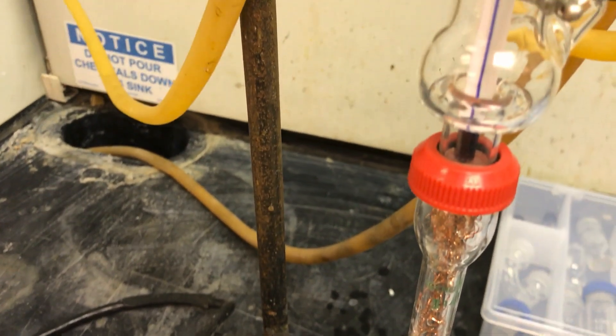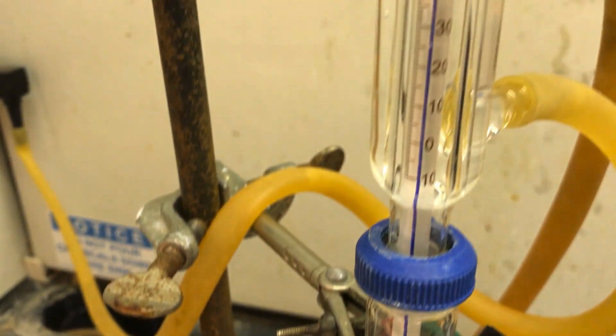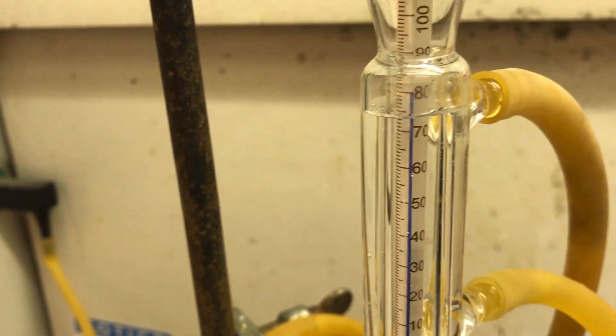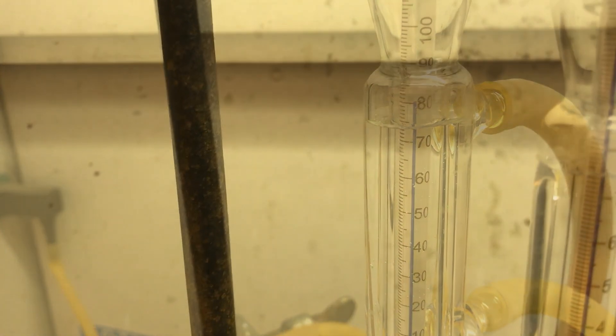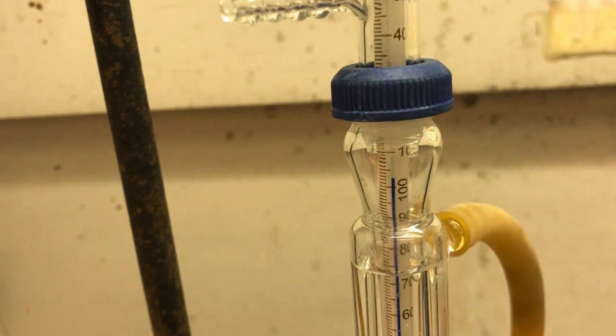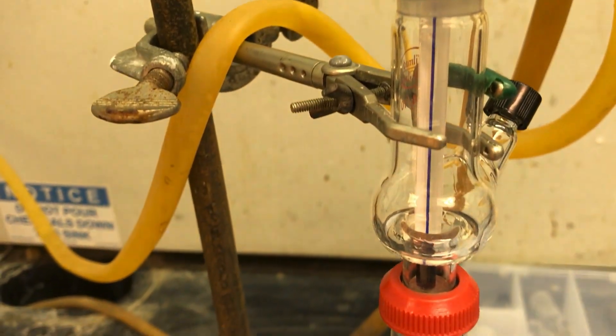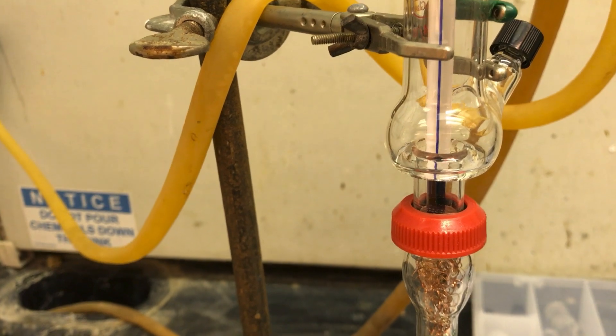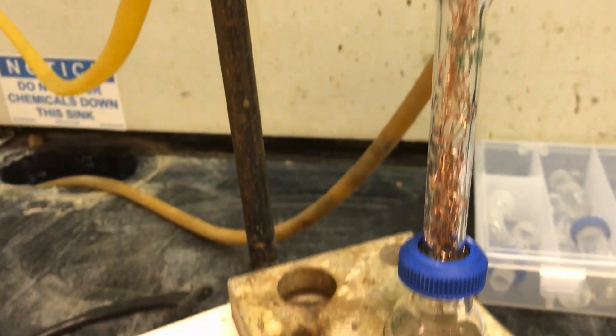Repeat this procedure of collecting fractions from the Hickman head and recording the temperature at which they were collected. If the temperature decreases, turn up the dial on the hot plate gradually. Continue collecting fractions in this manner until very little liquid remains in the round bottom flask, but do not distill to complete dryness.